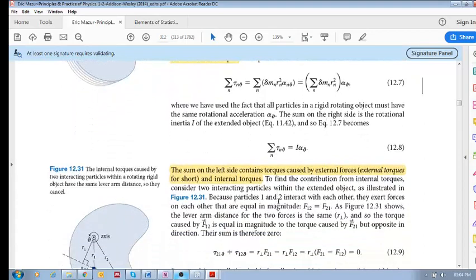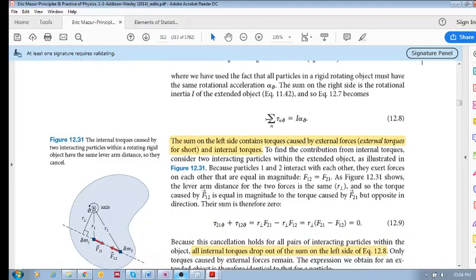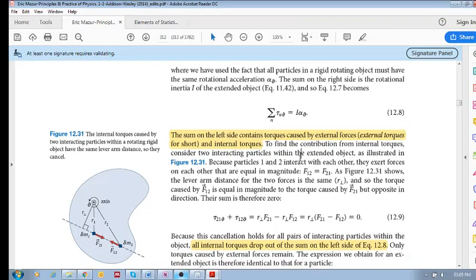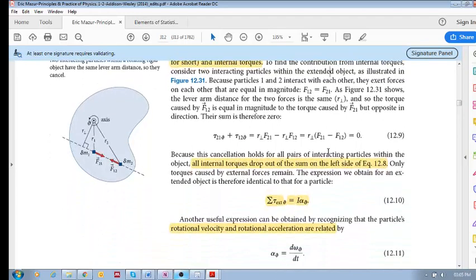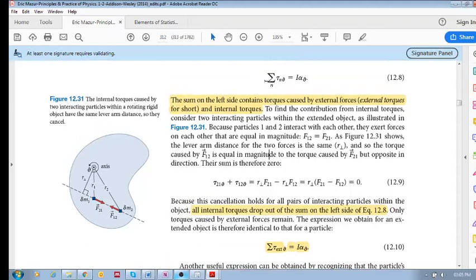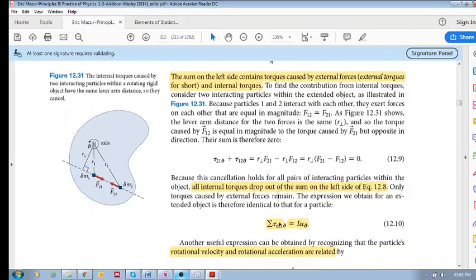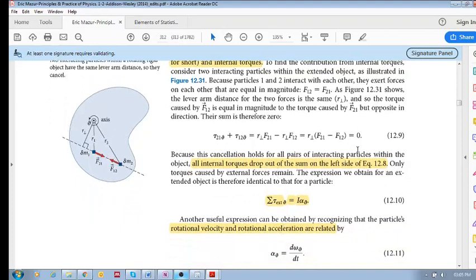But now what we need to see is that this includes both internal and external forces—torques caused by these internal and external forces. But we know that all internal forces will cancel out with each other, which means that their torques will also cancel out with each other. So all internal torques drop out of the sum on the left-hand side. We are left then with this, which says